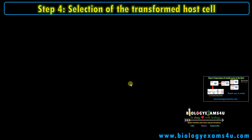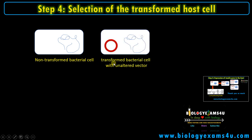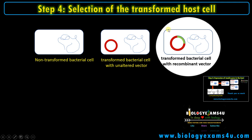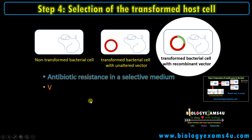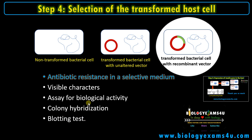Step four is selection of the transformed host cell. Once the transformation experiment is complete, we have three different types of colonies: first, non-transformed bacterial cells without any change; second, transformed bacterial cells with an unchanged (non-recombinant) vector — the insulin gene portion is missing; and third, transformed recombinant colonies with our gene of interest. We use methods like antibiotic resistance in a selective medium, visible characters, assay for biological activity, colony hybridization, and blotting tests to identify these recombinant transformed cells.